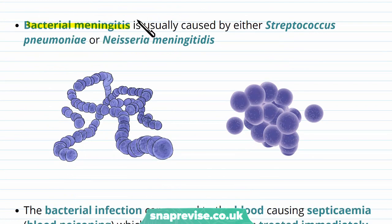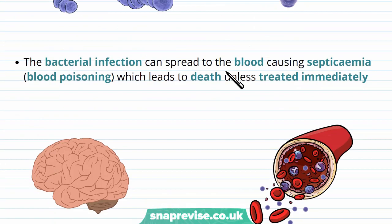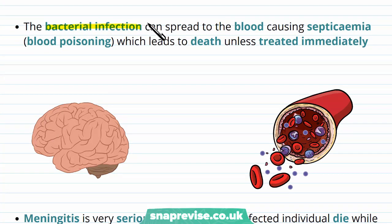Bacterial meningitis is usually caused by one of two species: Streptococcus pneumoniae or Neisseria meningitidis. Those are the two names of the bacteria that commonly cause bacterial meningitis. The bacterial infection can also spread to the blood, causing septicemia, or blood poisoning, which can lead to death unless it's treated very quickly.